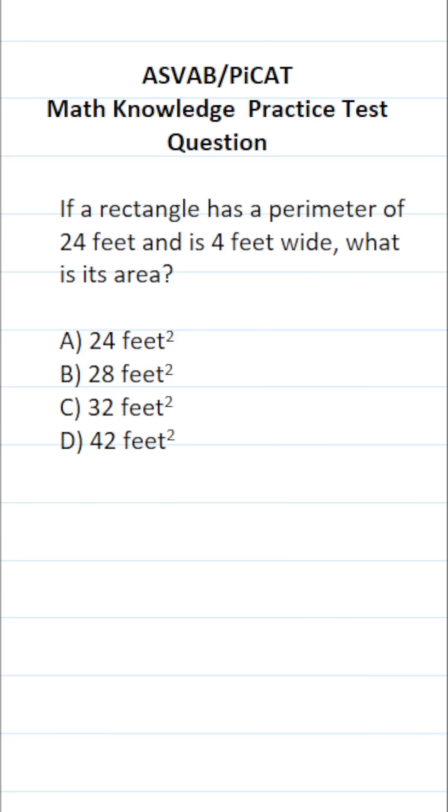This math knowledge practice test question for the ASVAB and PiCAT says, if a rectangle has a perimeter of 24 feet and is 4 feet wide, what is its area?